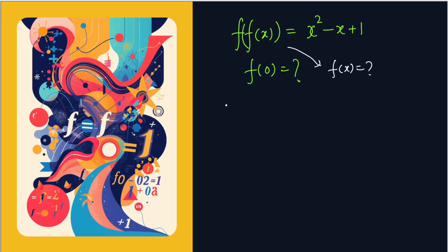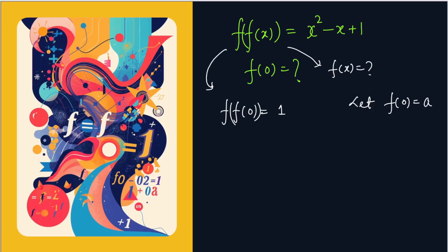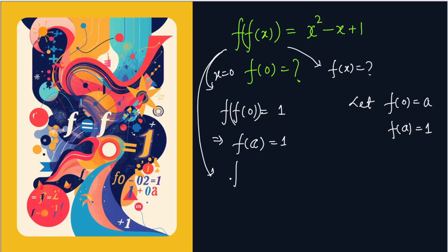The first thought in my mind: put x equal to 0. So F(F(0)) = 1. Let F(0) = A. By putting x equal to 0, F(0) is A, so you can say F(A) is equal to 1. Write down: F(A) = 1.